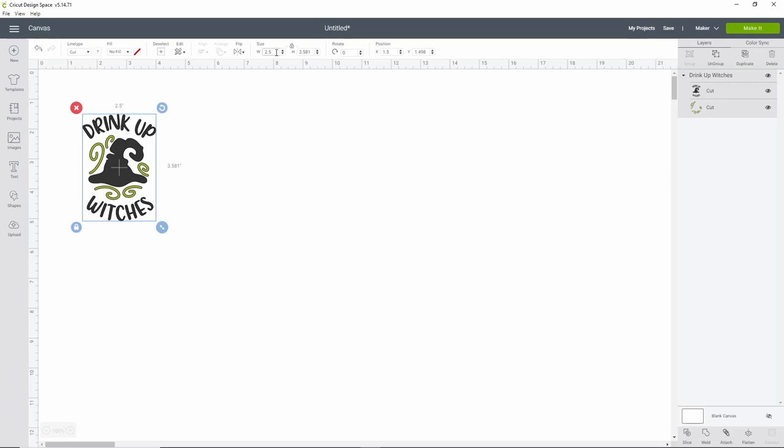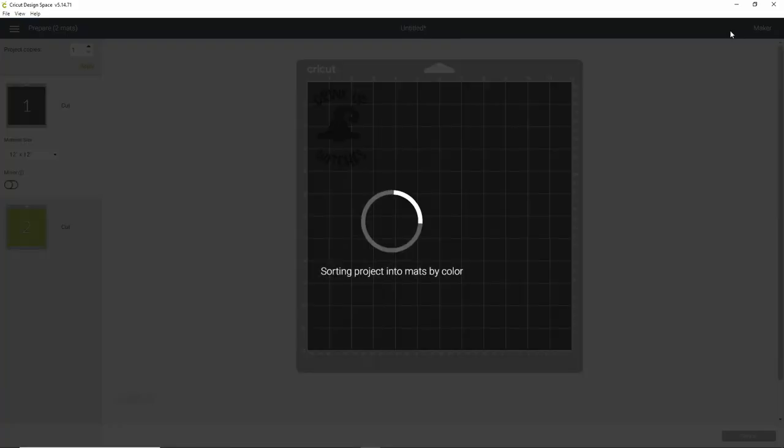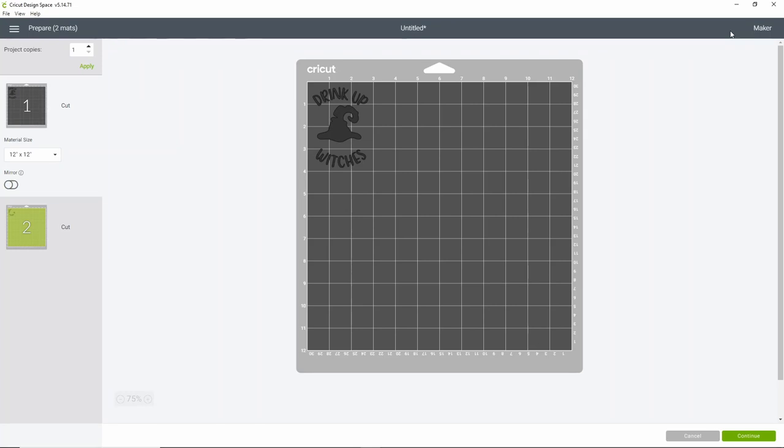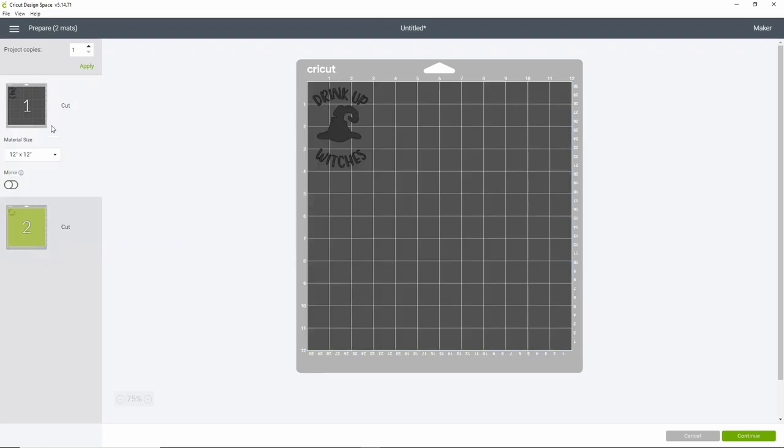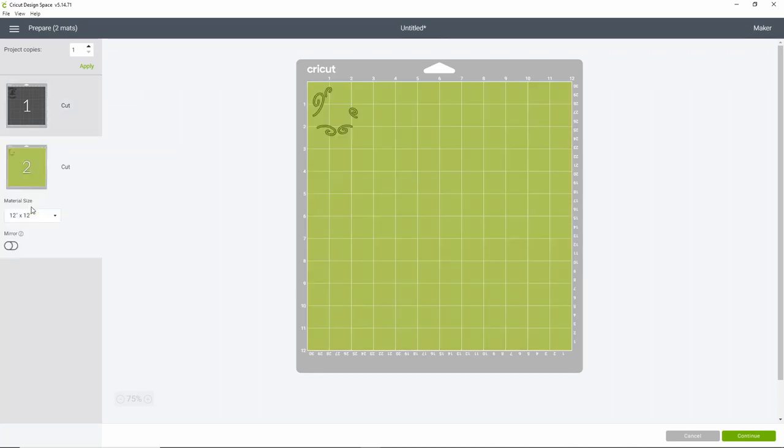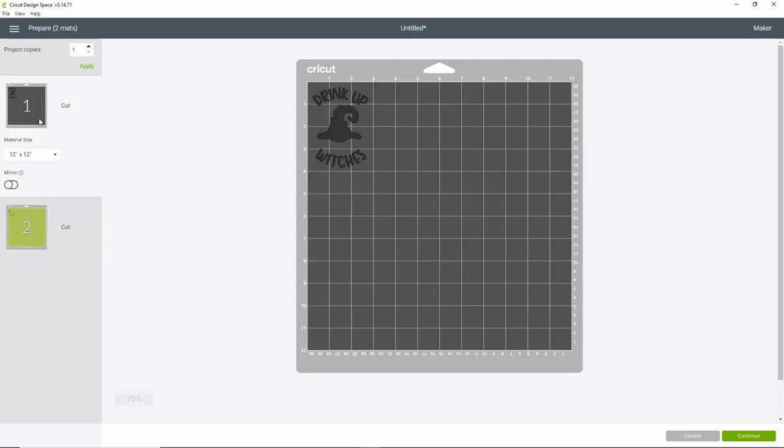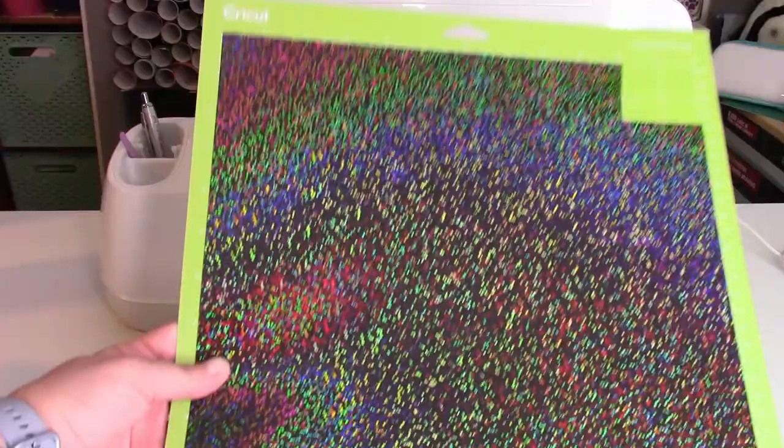This is what we're going to cut right here. We're going to click on Make It. You have the black part which is the hat and the words, and then you have the little green swirls. You can cut these in any colors that you wish with any vinyl that you wish. We are going to use some StarCraft Magic for the hat and the words, and then StarCraft HD for the little green swirls. I cut the StarCraft Magic on the vinyl with more pressure setting.